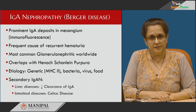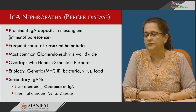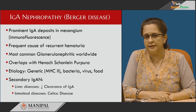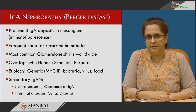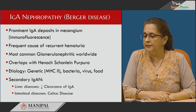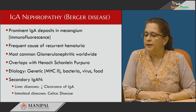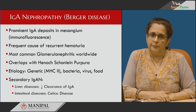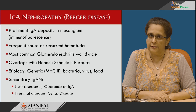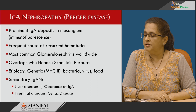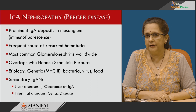In liver diseases, catabolism of polymeric forms of IgA usually occurs in the liver, and in these cases it is reduced. In intestinal disease, there are mucosal abnormalities which may give rise to IgA nephropathy, though this is just theory and has not been definitely proved. Etiologically, MHC2 is held responsible for this condition along with predisposition to the disease developing following exposure to certain kinds of bacteria, particular antigens in food, as well as viruses.